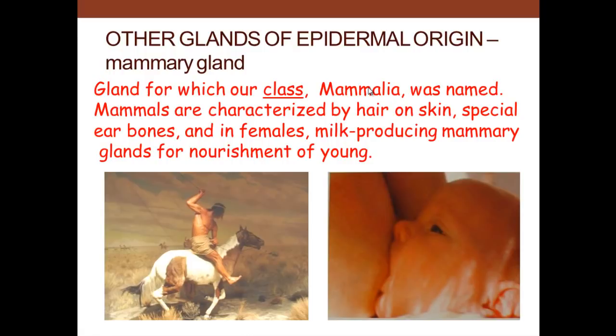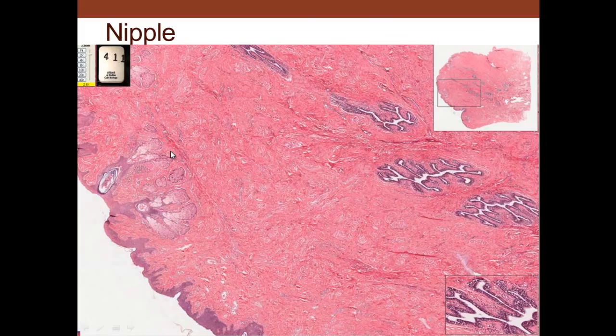Our class is Mammalia, and that name comes from the mammary gland — that is how it got its name. There are three basic characteristics that make a mammal: one is hair — we don't have scales; the second is milk-producing mammary glands for nourishing the offspring; and the third is special ear bones. Here we see the nipple where the lactiferous ducts ultimately discharge their contents.